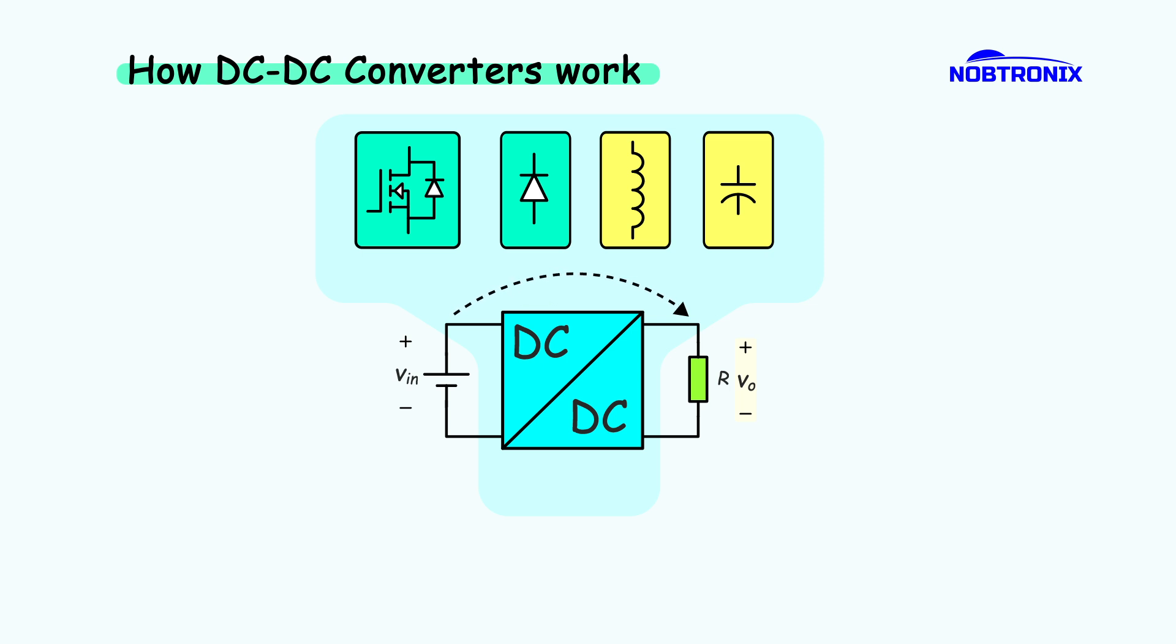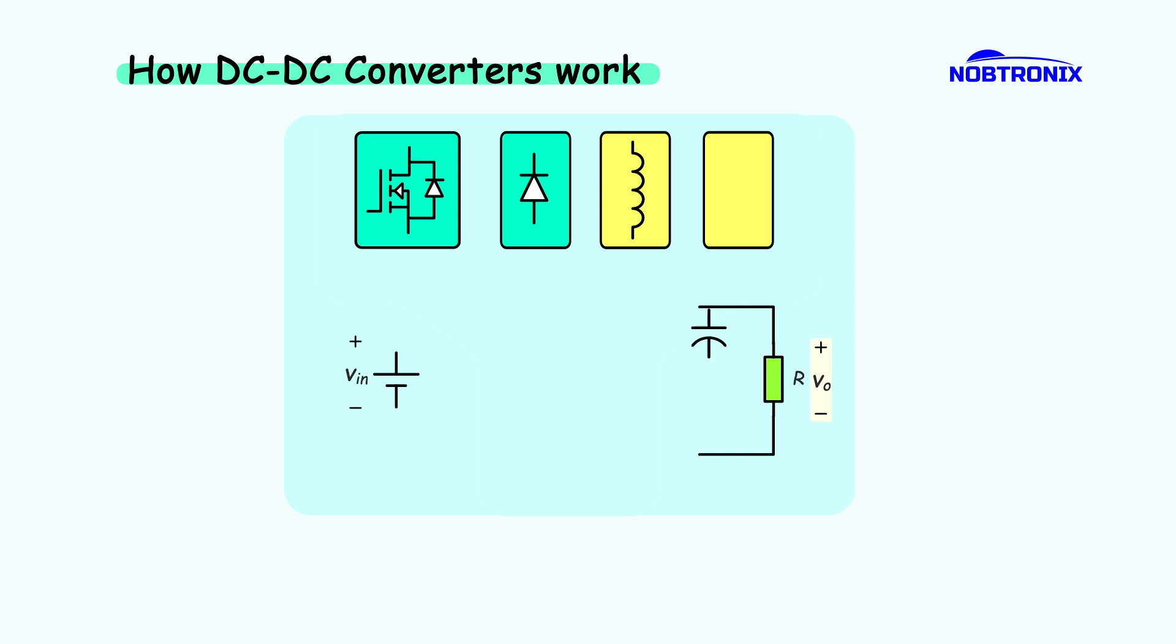You've got the MOSFET and diode, which are semiconductor parts, and then the inductor and capacitor, which are passive components. By arranging these together in different ways, we can create different types of circuits, each with its own function. Let's build a simple DC-DC converter using just one of each component. Since we only have one capacitor and we want the output voltage to stay steady, we'll place the capacitor right next to the output load.